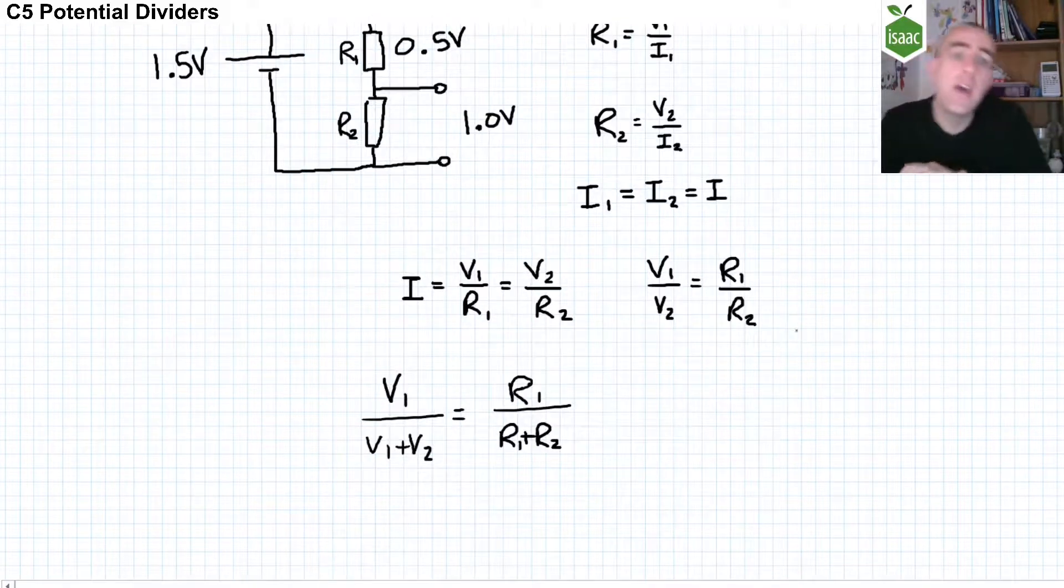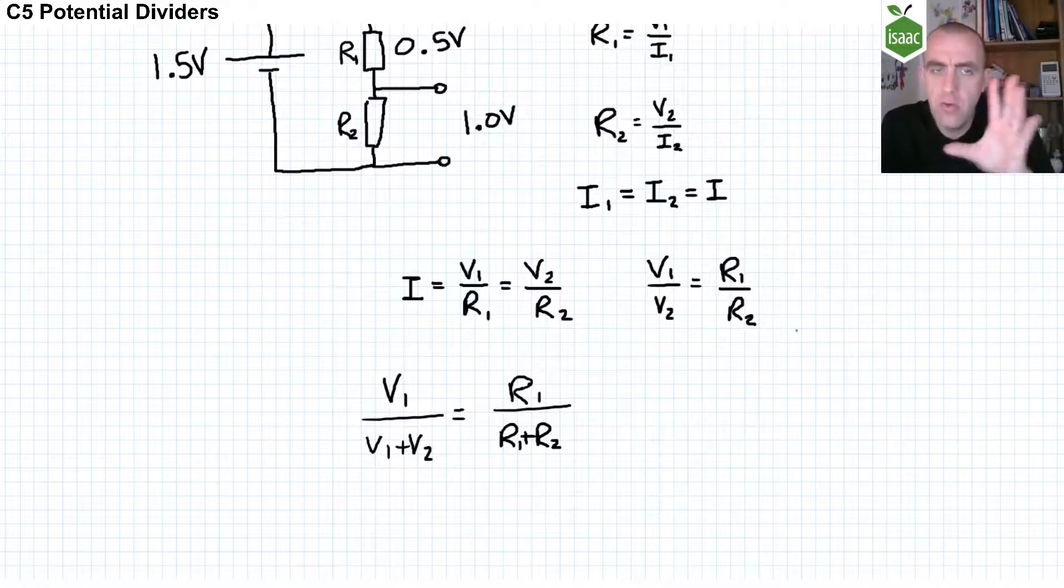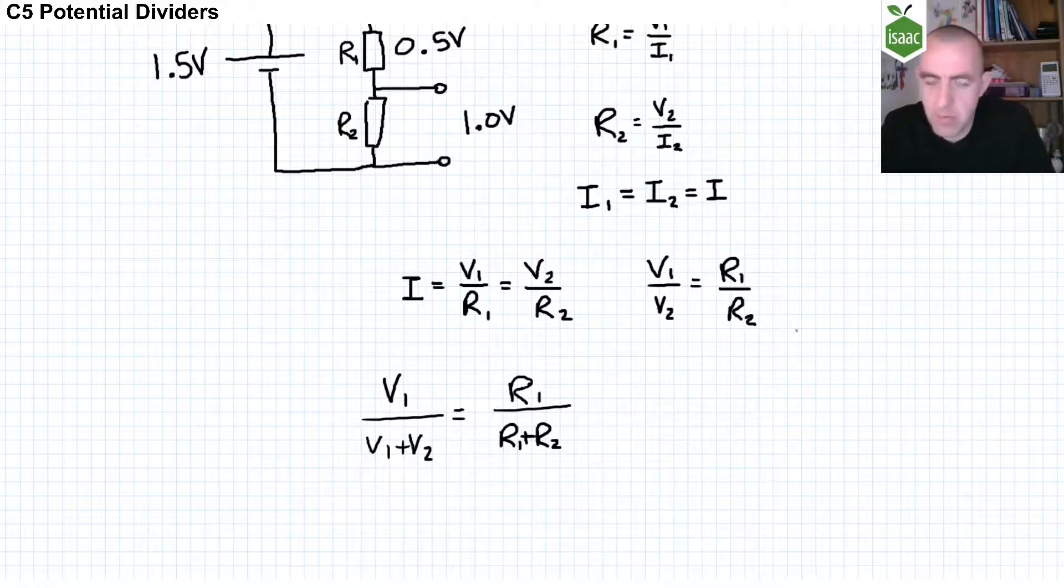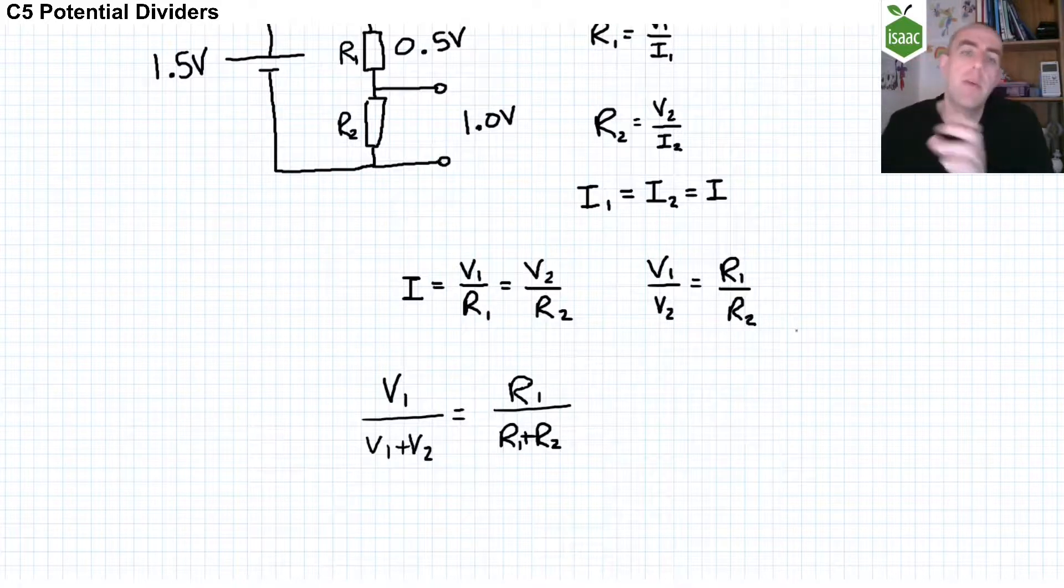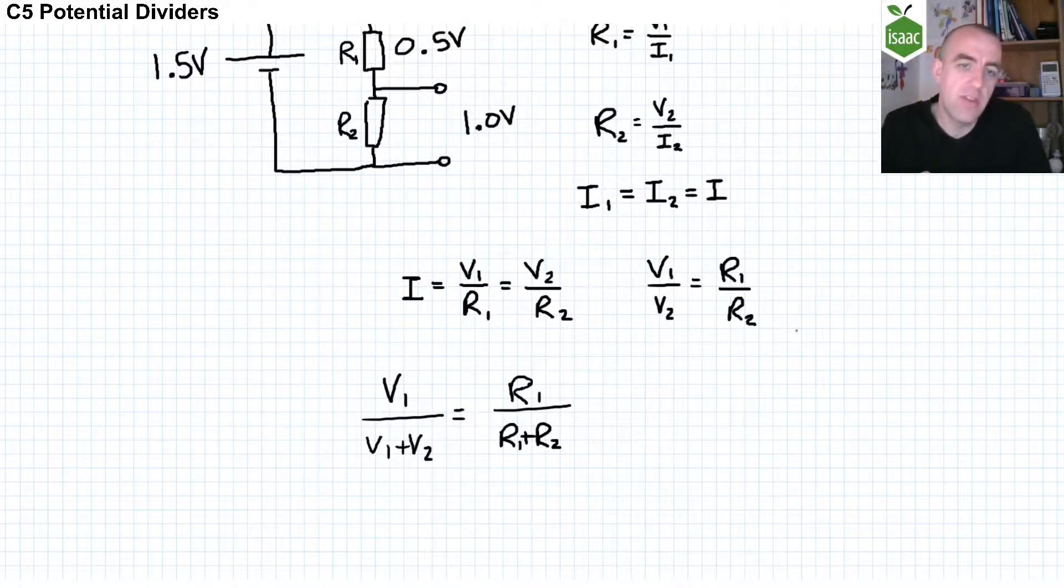It can also be shown that the voltage share compared to the total voltage across both resistors of a particular resistor is equal to the resistance share of that particular resistor compared to both resistors.